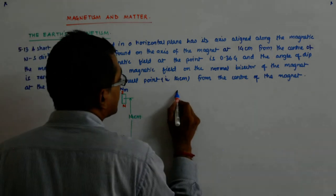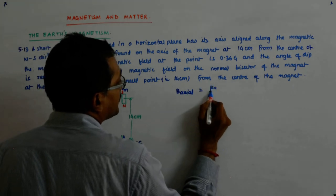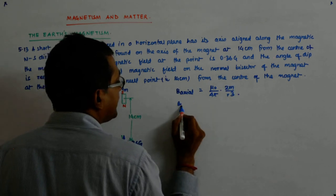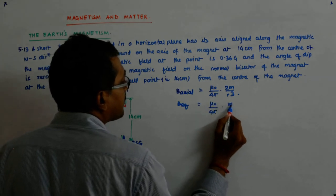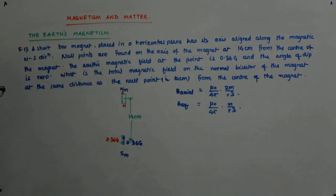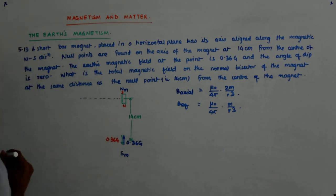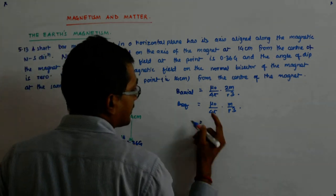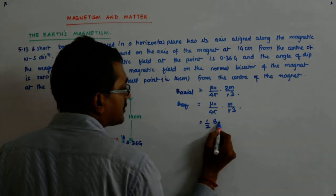Now let us write the formula. B axial, I am writing the magnitude, is mu0 upon 4 pi into 2m by r cube, and B equatorial is mu0 upon 4 pi into m by r cube. And the directions are opposite. So if I come the same distance here, then what happens? The magnitude is half. B equatorial is half of B axial. See, this is half of this.